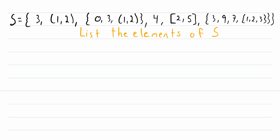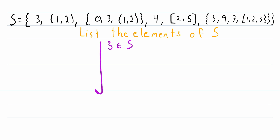We have to pay very close attention to when an element starts and when it stops. Looking through this set, first we have just the number 3, immediately followed by a comma separating it from the rest of the elements — so 3 is an element of S. Then we see an open parenthesis, so this is where the next element starts, and it's not going to stop until that parenthesis is closed. We see 1, comma, 2 — these are not separate elements.